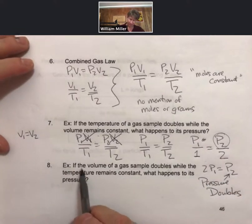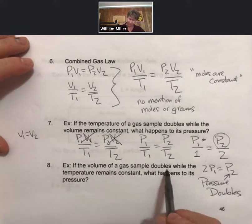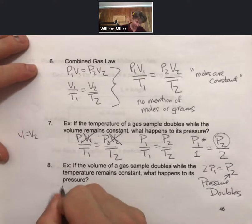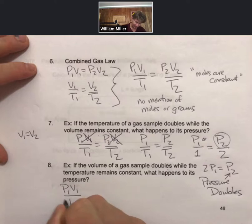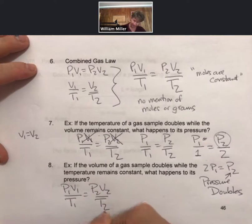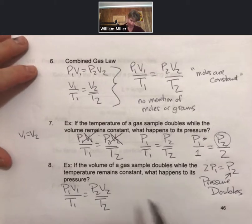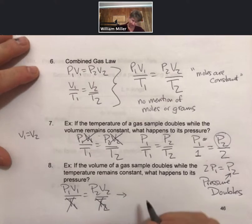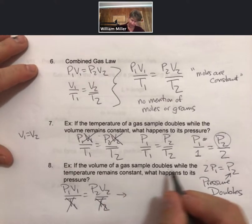Here's another one. If the volume of a gas sample doubles while the temperature remains constant, what happens to its pressure? I will return to the combined gas law. I will say temperature remains constant. And now if the volume of a gas sample doubles,